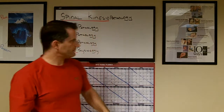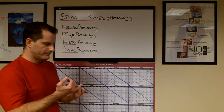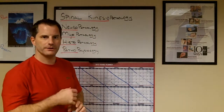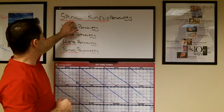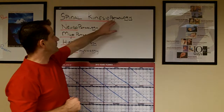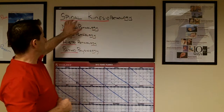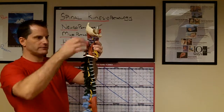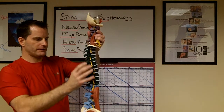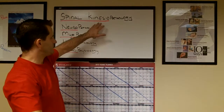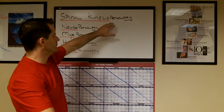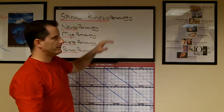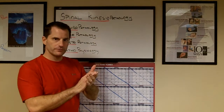So let's go over the steps on the board. Again, vertebral subluxation complex. The first step leading to spinal kinesiopathology. So what does that mean? Spinal, obviously, the spine, which houses the entire spinal cord. Kinesio, meaning movement. So we have loss of movement of the spinal vertebrae.